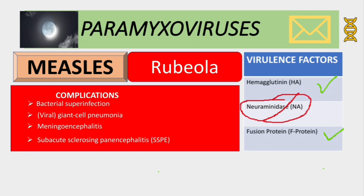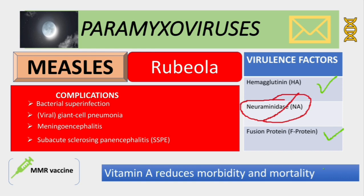For measles we have a vaccine — the MMR vaccine, which is live attenuated and includes measles, mumps, and rubella. This vaccine should not be given to pregnant women; it is contraindicated. There is also a vitamin supplement — vitamin A — which can be given to reduce morbidity and mortality.